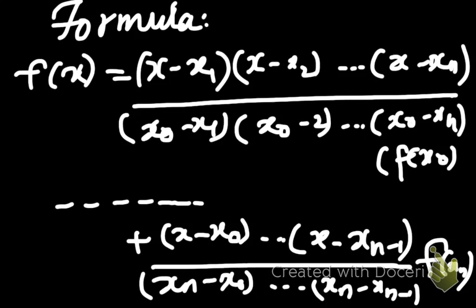And the formula goes on like this. f of x is equal to x minus x1 into x minus x2, and so on, into this whole thing. This f of x0 comes in the top.